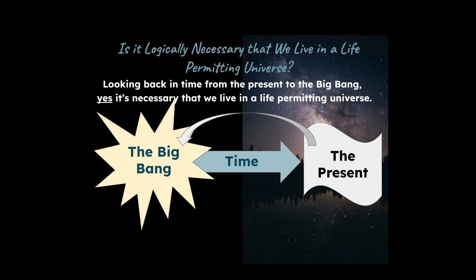I've created a little graphic for this. This argument does have some legs to it: if we are in the present looking back in time to the Big Bang, it is true that we live in a universe that allows for intelligent life to exist, because we're here — we're intelligent life. We're able to look back and start to understand the physics that has allowed us to get here. So it is true that, looking back, we must be in a universe that allows for intelligent life to exist. But that's not really the point — that's a misdirection. That's not talking about the Big Bang itself.